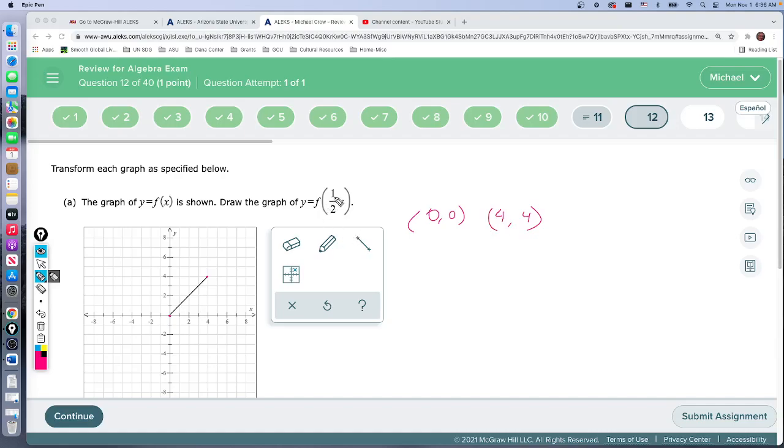So what we're going to do is this is actually a horizontal stretch. So we're going to multiply each x by 2. So I just take my points and multiply the x coordinates by 2.